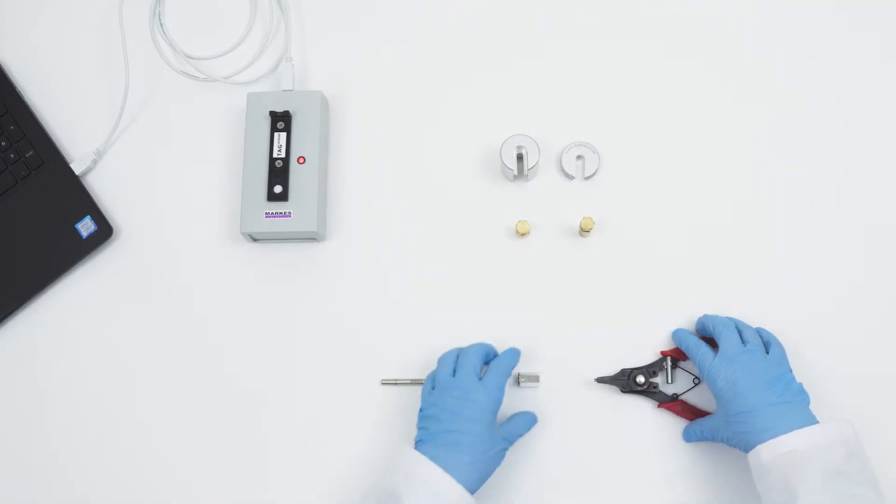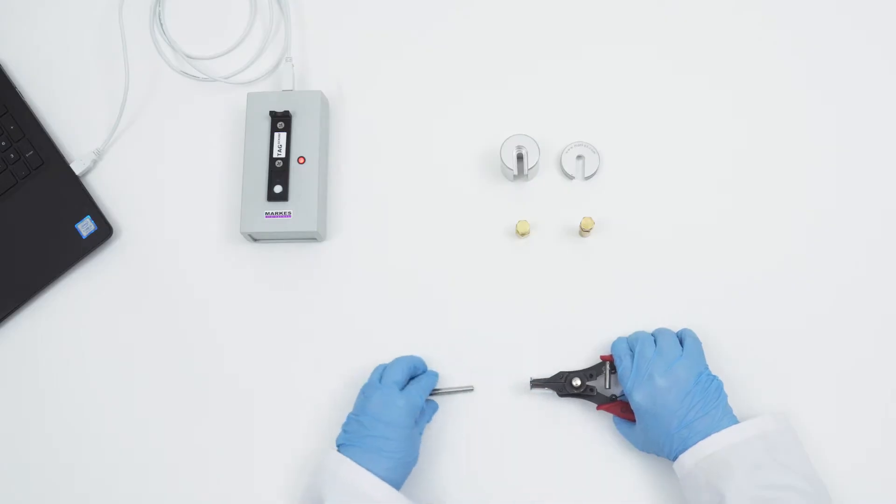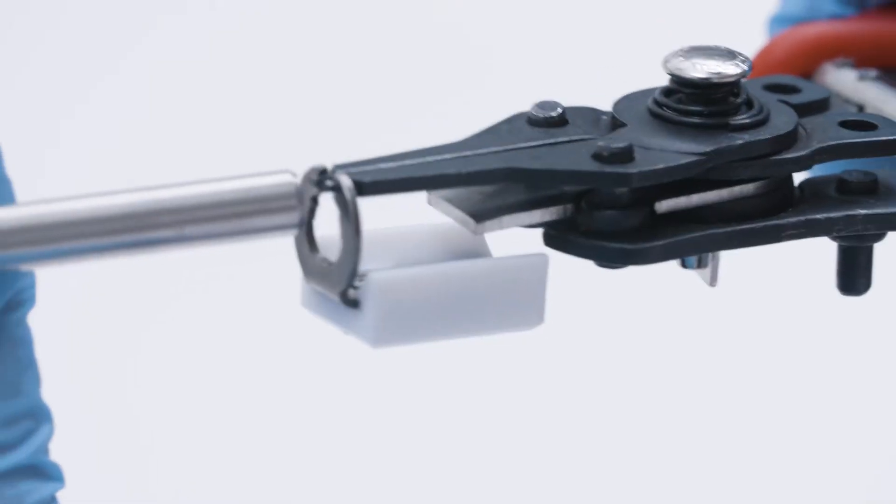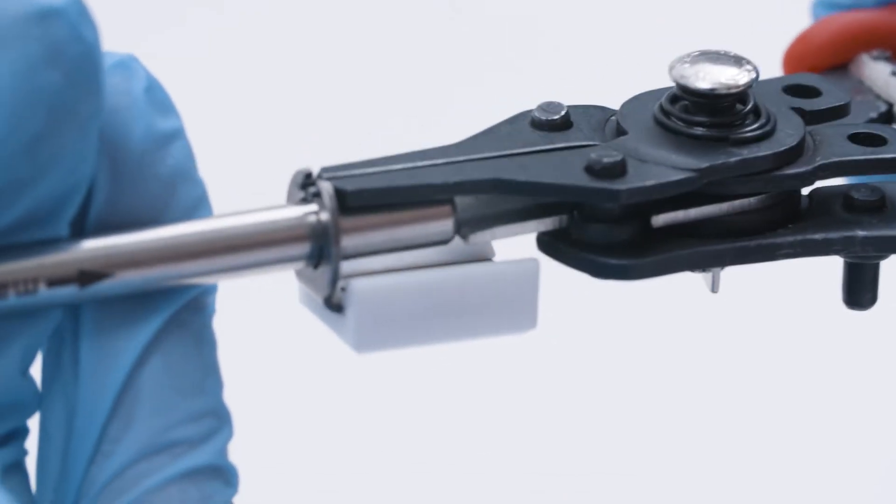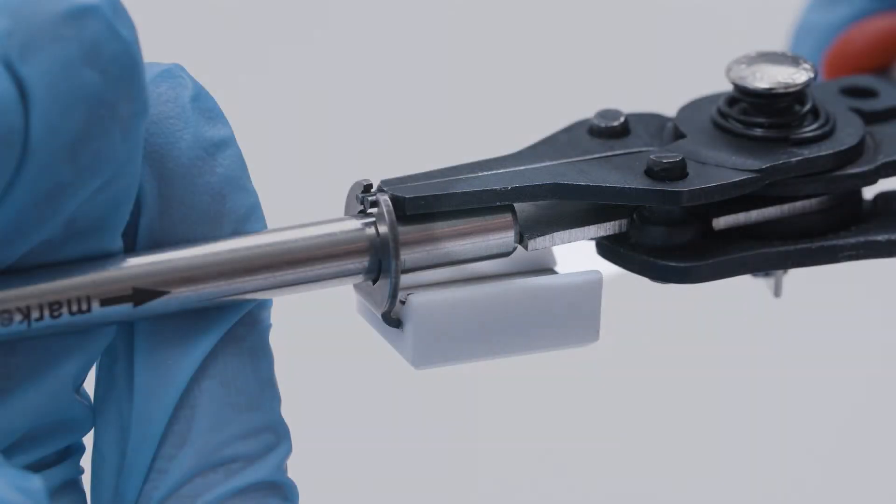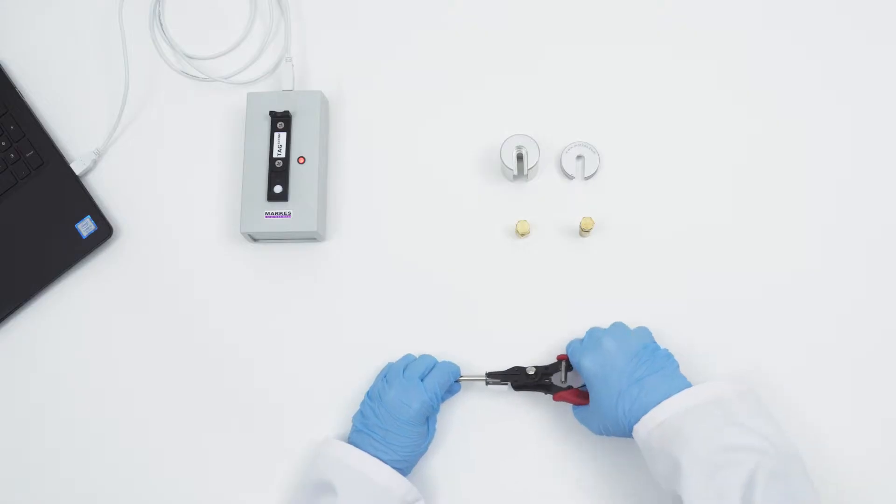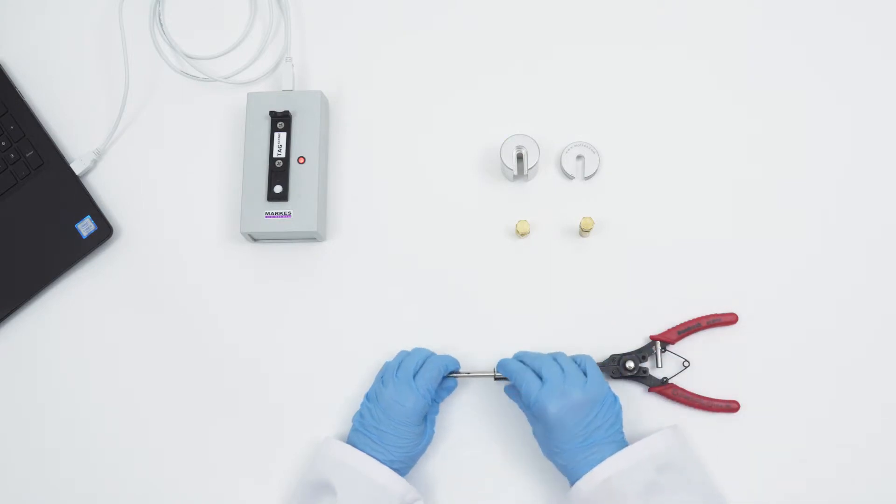To begin, slide the tip of the tag removal tool into the tag clip. Be sure to hold the TubeTag fixing removal tool with the metal stop facing the inside of the tag. Squeeze the handles of the tool tightly while sliding into position on the non-sampling end of the tube. Note, the metal stop on the tool will prevent the tag from being pushed on too far. Once the metal stop is in contact with the tube, stop squeezing the handles. Your tag is correctly placed.